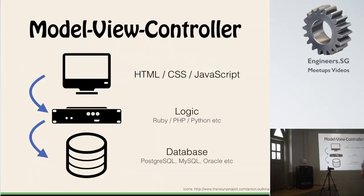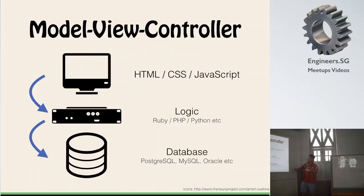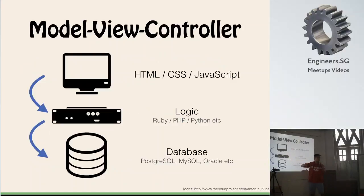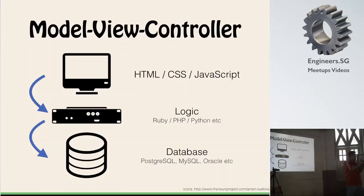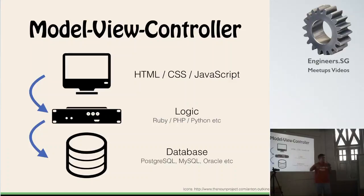We're going to touch a little bit on Model View Controller. You can see these three components here. Whenever you load a web page, what you get on the browser is HTML, CSS, and JavaScript. CSS is the thing that gives you your colors and typography — Times New Roman versus Courier versus Arial. HTML is the DOM — the basic building blocks of your paragraphs, text, headers, and titles. CSS is basically styling your text on the page.